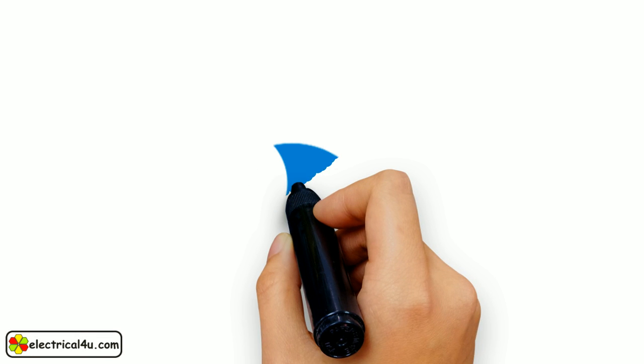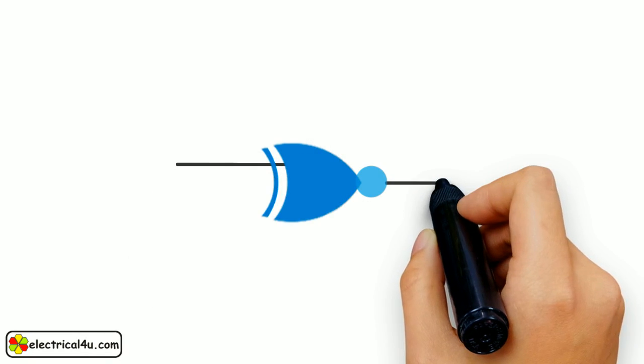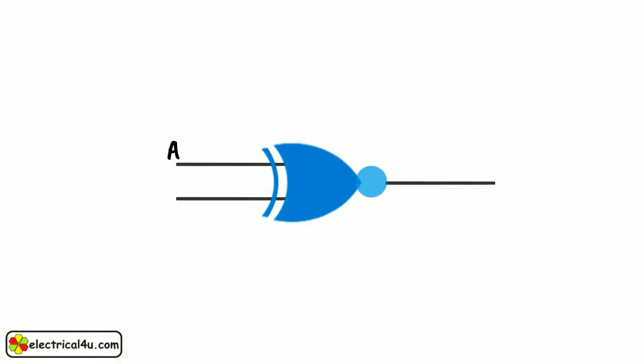An XNOR gate is symbolically represented as shown. Hope you got a clear idea. Thank you.